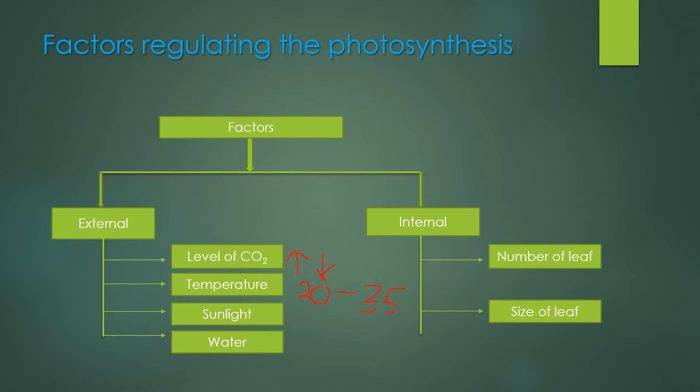The next factor is water. Water is also another important raw material of photosynthesis. If there is any deficiency of the water supply, the rate of photosynthesis will decrease. And if we give extra water, it also decreases the rate of photosynthesis. So we have to maintain its optimum level.